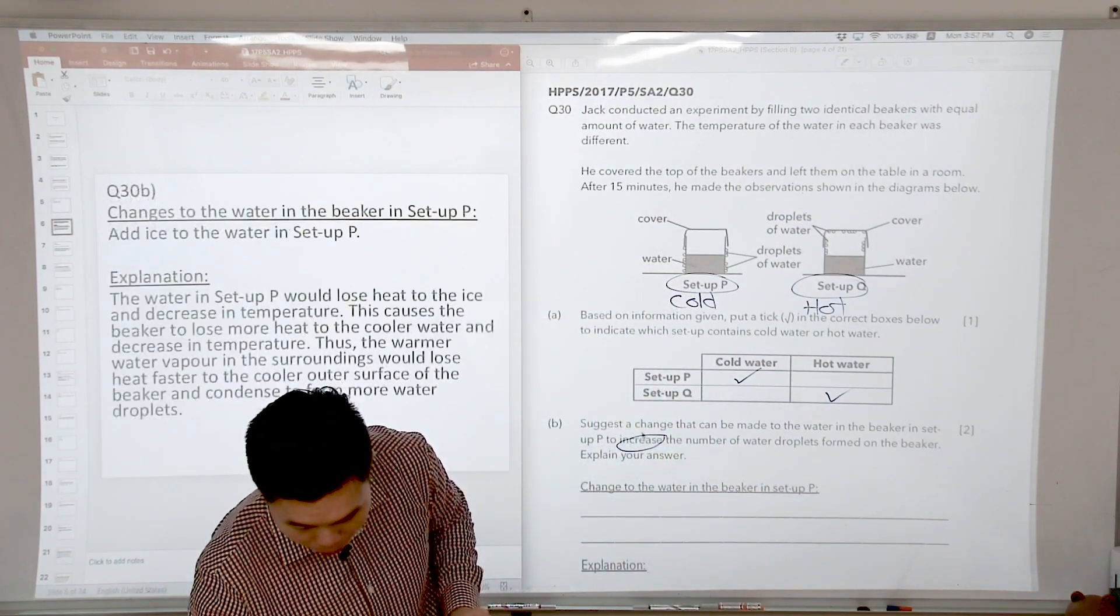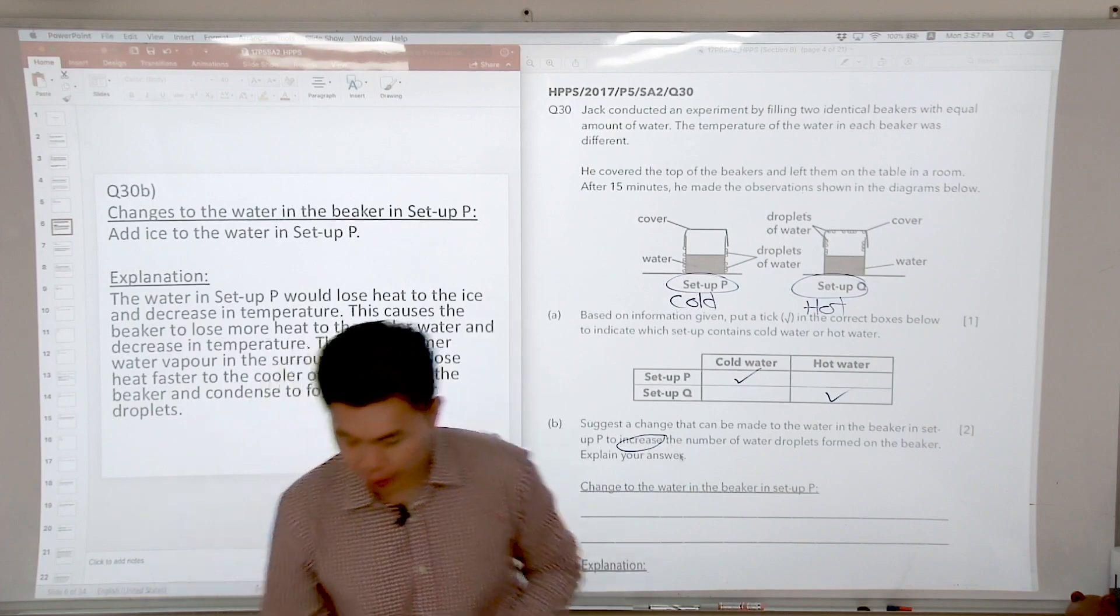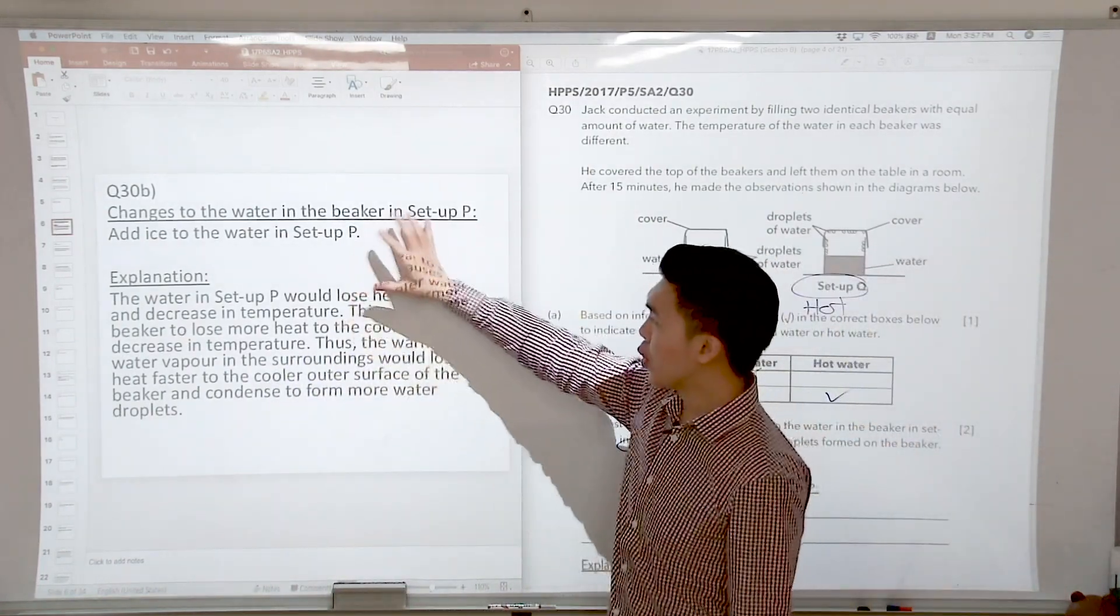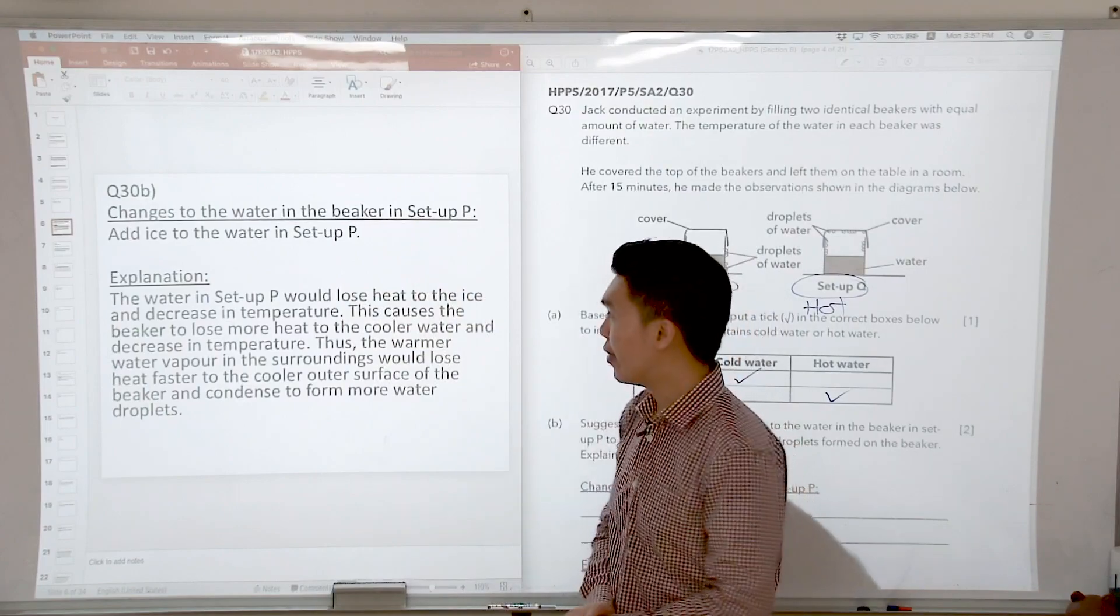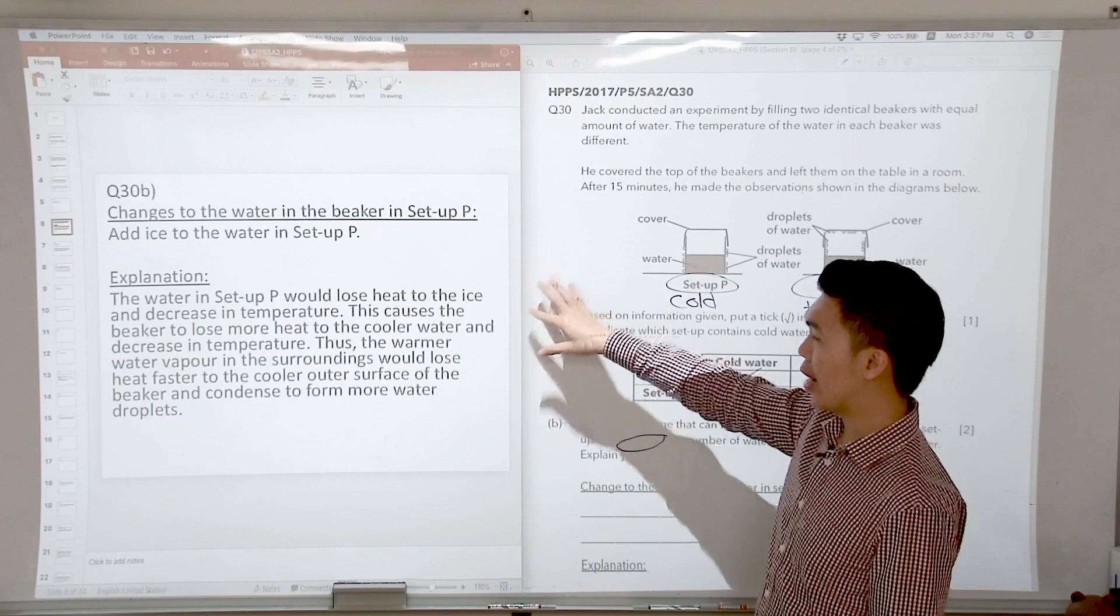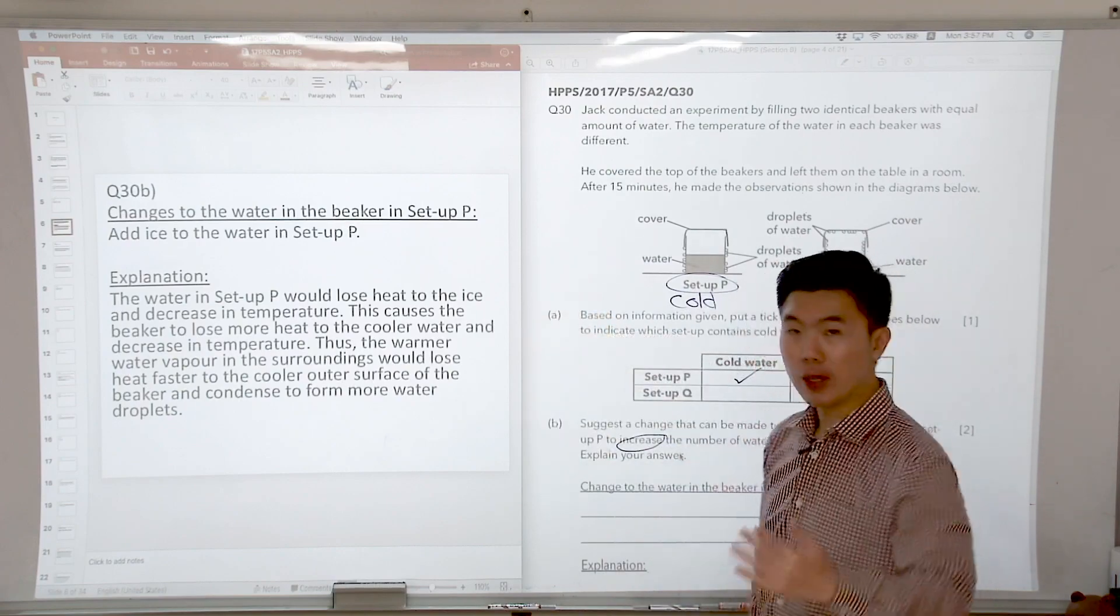So this is the answer for part B. How do you make it colder? You add ice to the water in the cup and then the water in setup P would lose heat to the ice and decrease in temperature. So that's the first step.